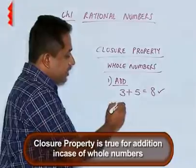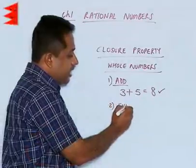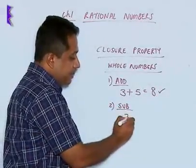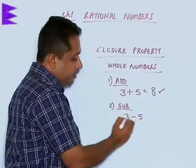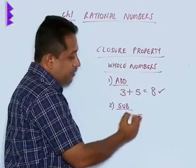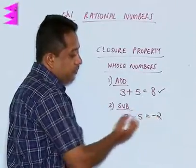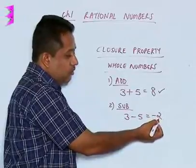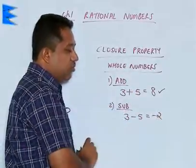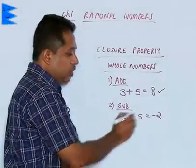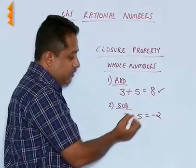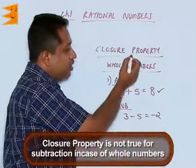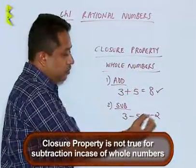What about subtraction? When we subtract two whole numbers, let us say 3 and we are subtracting 5 from it, we are going to get minus 2. Minus 2, if you observe, is not a whole number — it is an integer. So we can say that for subtraction, the closure property does not hold good.